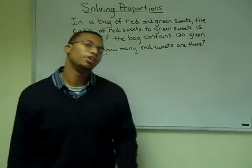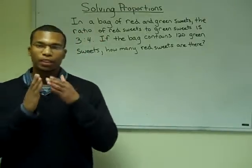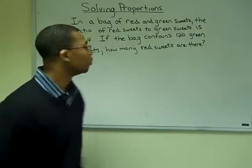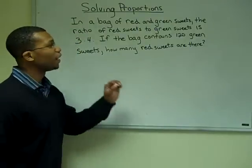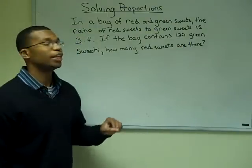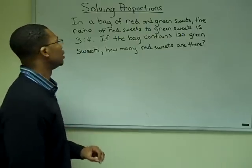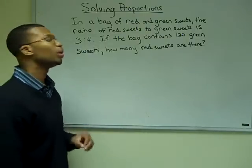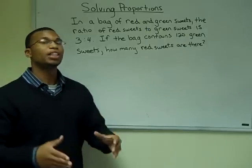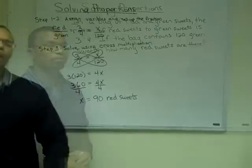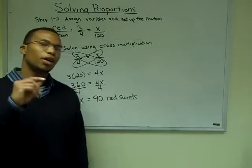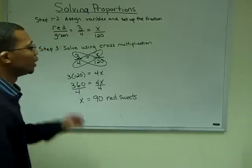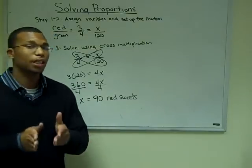All right, this is the moment that we've all been waiting for. Now we're ready to solve problems that utilize proportions. In this example, it says that in a bag of red and green sweets, the ratio of red sweets to green sweets is three to four. If the bag contains 120 green sweets, how many red sweets are there? In this problem, we recognize that we are looking for the red sweets.